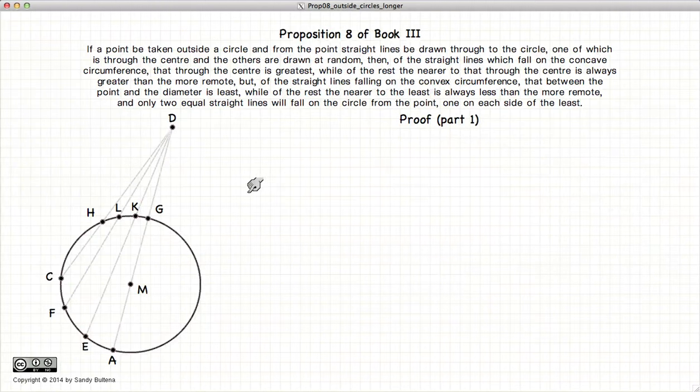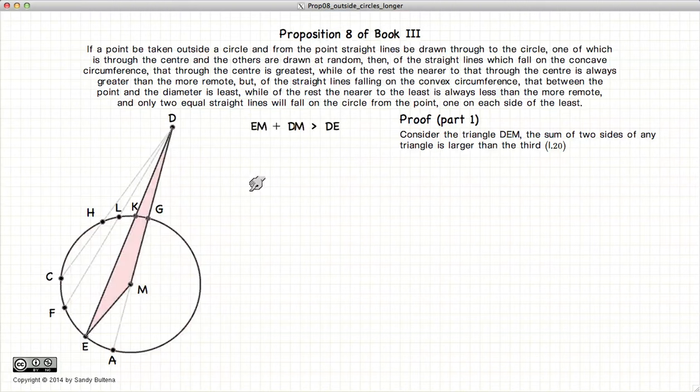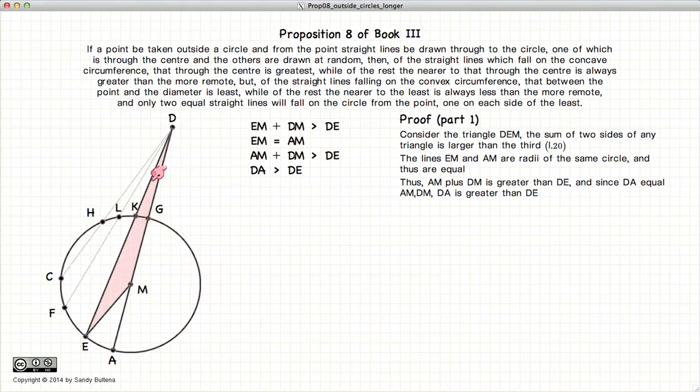So first proof, part one. Let's look at our pink triangle. Now EM plus DM, being the two sides of the triangle, will always be larger than the third side of the triangle, DE. But EM is equal to AM. So in other words, instead of EM plus MD, we have AM plus MD, or in other words, this entire line will be larger than the third side of the triangle, DE. So we have DA is greater than DE.